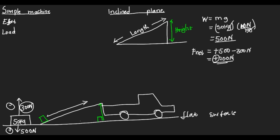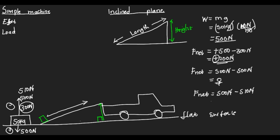Let's say we increase from 300 to 500 newtons. The net force is 500 minus 500, which equals zero — the box will remain where it is. Now let's apply 510 newtons: 500 minus 510 gives negative 10 newtons. The negative sign gives us the direction the box will move. So if we apply 500 newtons or greater, the box will be able to move upward. Without a machine, we are expected to apply a force greater than the weight of the box.